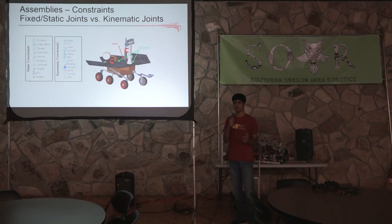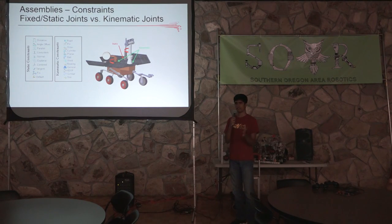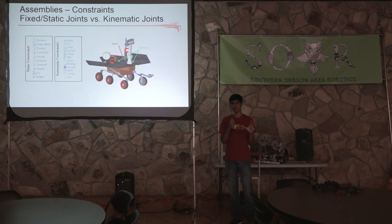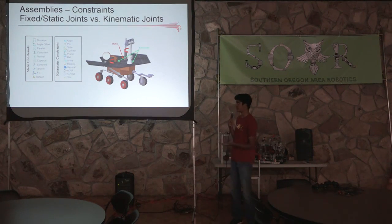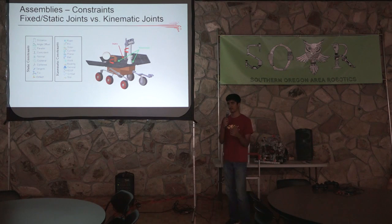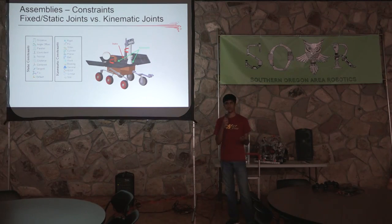In terms of assemblies, when you set them up you bring in different part files and make them have a relationship to each other — these relationships are called constraints. There are two types of joints mainly used in FTC: static joints and kinematic joints. Static is basically anything welded or screwed onto your robot that's stationary and doesn't move. Kinematic joints are when a part moves in relationship to another. The two main types are pin joints — like when a wheel rotates — and slider joints, which you would use to make linear slides.